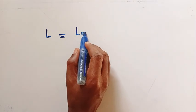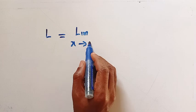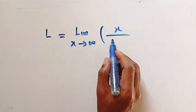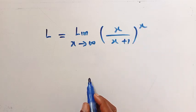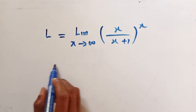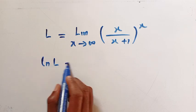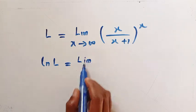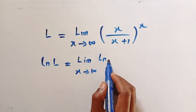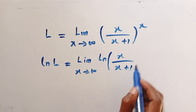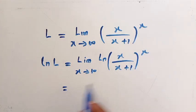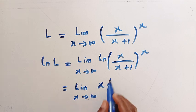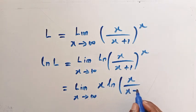Suppose I let the limit equal L — that is, L equals the limit as x approaches infinity of x divided by x plus 1, raised to power x. If I introduce the natural logarithm, ln, to both sides, we have ln L equals the limit as x approaches infinity of ln of x divided by x plus 1, raised to x. By the rule of logarithms, the power x comes in front: ln L equals the limit as x approaches infinity of x times ln of x divided by x plus 1.